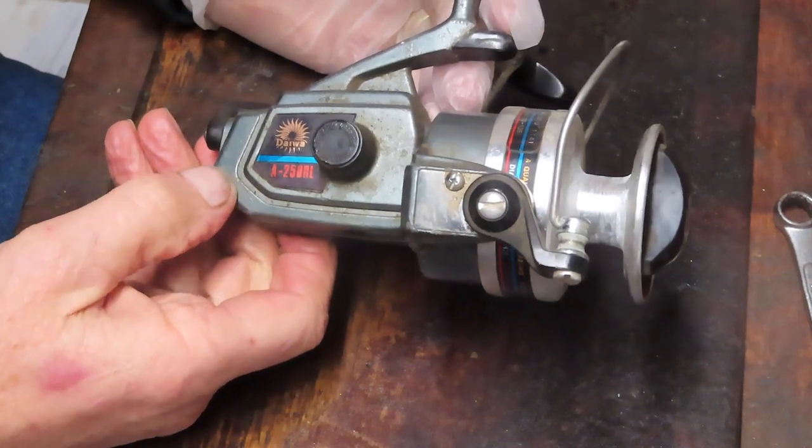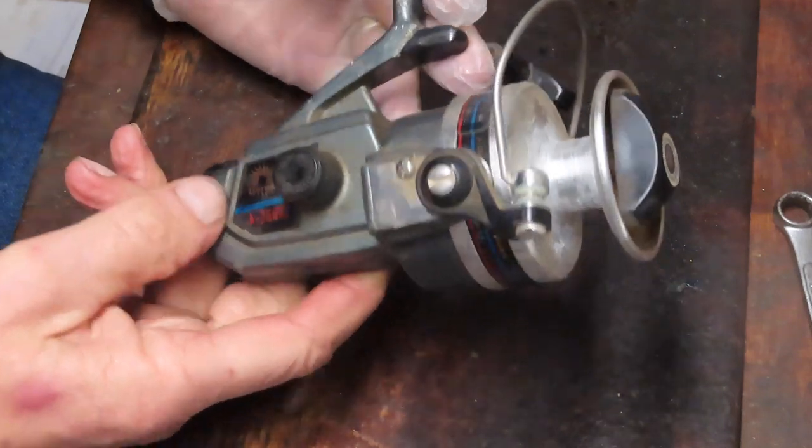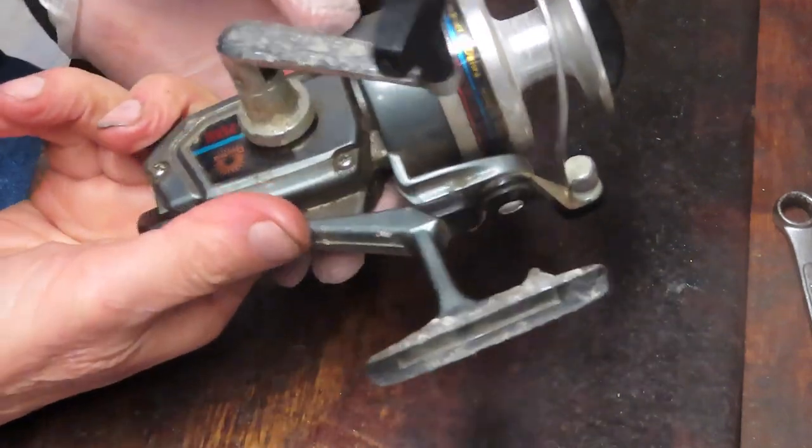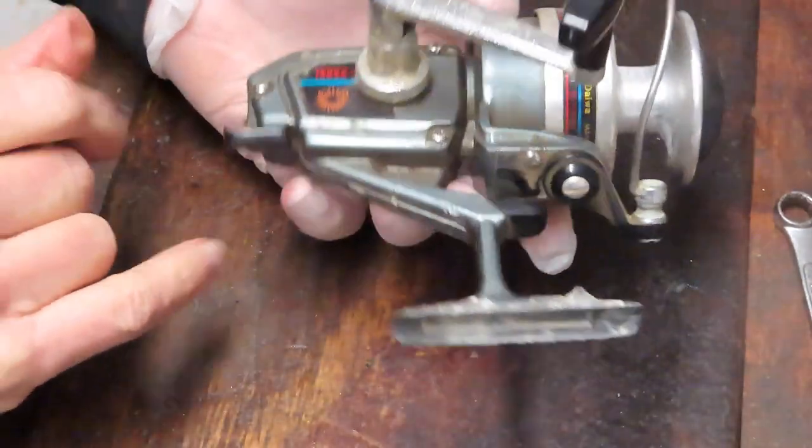It's the A250RL. I believe the A stands for the Apollo series. This one was made in Korea. It's a beautiful example of the reel, though it's been sitting in storage and is very dirty.